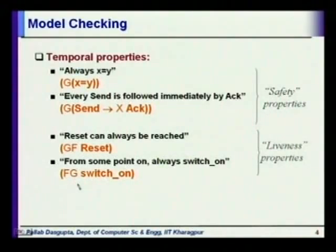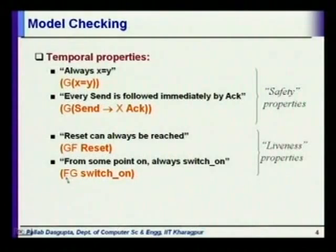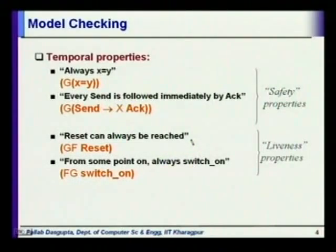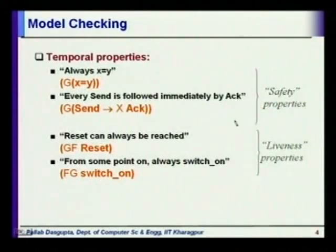An example liveness property: from some point on, always switch on — F G switch on. That means you have to locate some point after which this is going to happen. About 99 percent of the properties that people check in hardware are safety properties. So if a methodology works on safety properties alone, it is quite useful in practice.